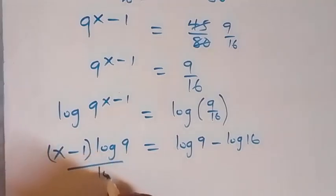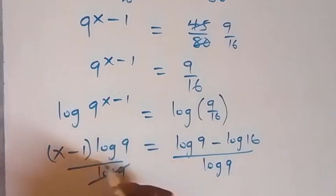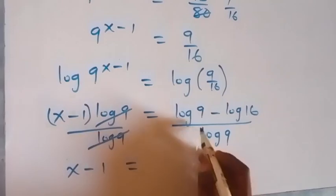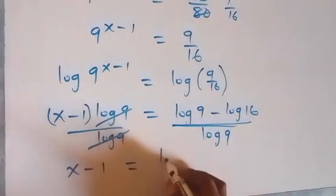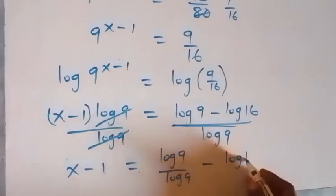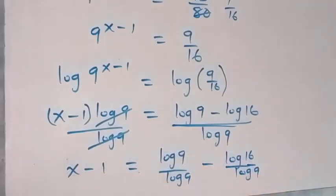Then we divide both sides by log 9 from here. Now we divide this side as well by log 9. And log 9 cancel out here. And what we have on this side, we have x minus 1 now equals to. Here let's separate this into 2 fractions. And that will be log 9 over log 9. And log 9 over log 9. Then minus log 16 over log 9. And log 9 over log 9 here is same thing as 1.